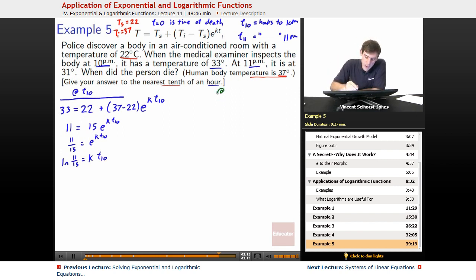So let's look at the 11 p.m. hour. So at t_11, that's not t equals 11, that's t_11, which is just the name that we gave to the number of hours after the time of death when it gets to 11 p.m. So at t_11, we've got a temperature of 31 degrees at 11 p.m. So surrounding environment is still 22 plus initial, the temperature was still 37, minus 22, e^(k t_11).